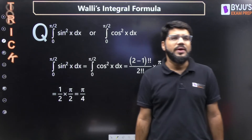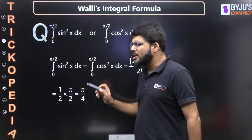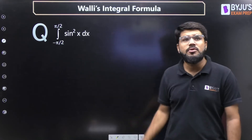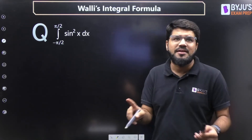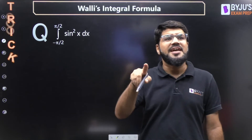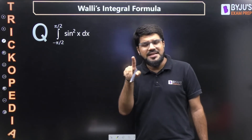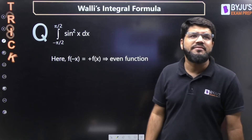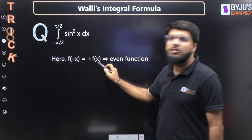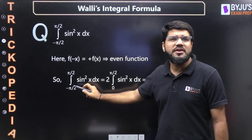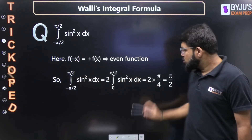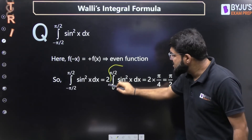In Walli's integral formula, note that the integration limit is 0 to π/2. If the limit is −π/2 to π/2, you cannot apply Walli's directly — you use properties of integration. For example, with sin²(x): since sin(−θ) = −sin(θ), squaring gives (−sin x)² = sin²(x), so f(−x) = f(x), making it an even function. For an even function, the integral from −a to a is twice the integral from 0 to a, giving 2 × π/4 = π/2.